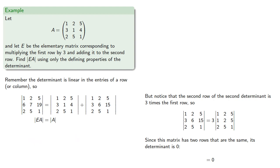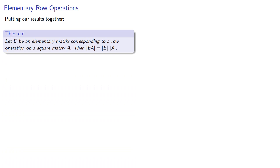Or since the determinant of E is one, we again have the determinant of EA equal to the product of the determinant of E and the determinant of A. So putting our results together, if E is an elementary matrix corresponding to a row operation on a square matrix A, then the determinant of EA is the determinant of E times the determinant of A.